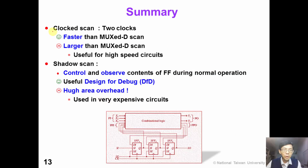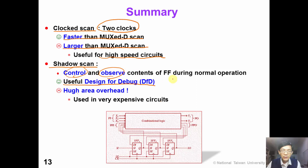In summary, in this video we talked about clock scan, which requires two clock systems. Clock scan is faster than MUX-D scan; however, it is larger because it needs two clocks, making it useful for high-speed circuits. We also introduced the shadow scan chain architecture, which is a useful design-for-debug technique that lets us control and observe flip-flop contents during normal operation. The penalty is that it requires huge area overhead, so it is only used in very expensive circuits. That's all for this lecture — thank you for watching.